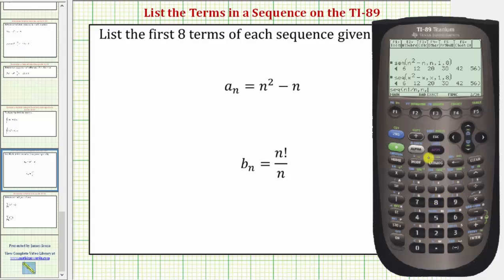Again we want the first eight terms. So n will go from one to eight. So we enter one, comma eight, close parenthesis, and enter.